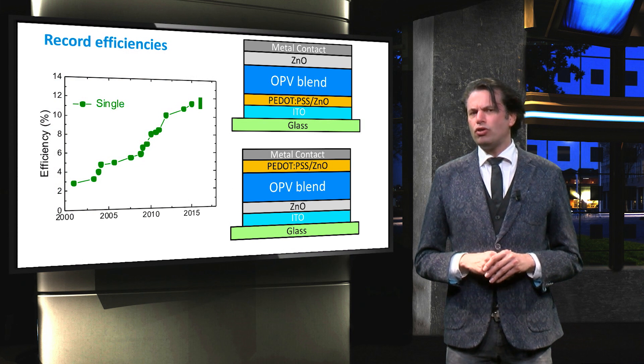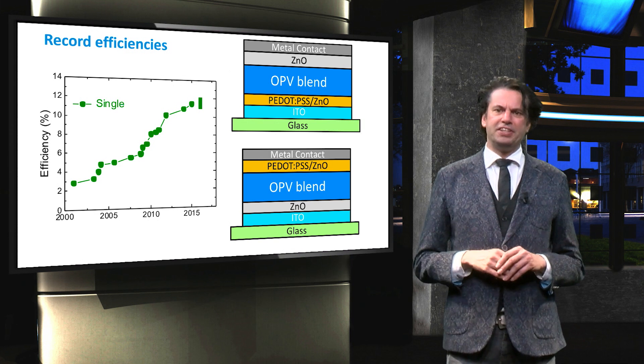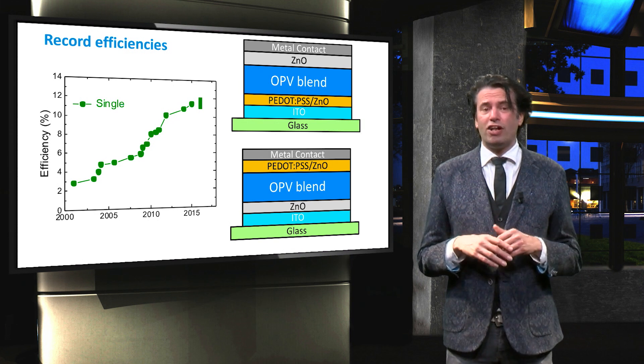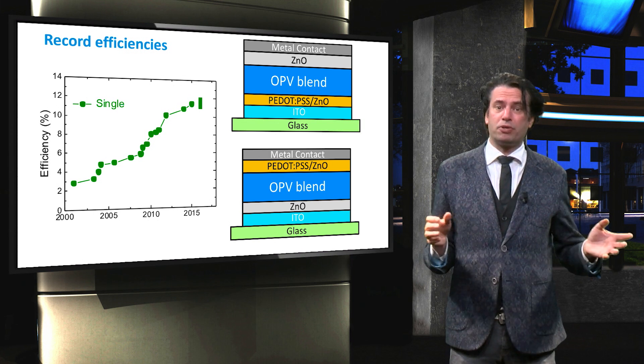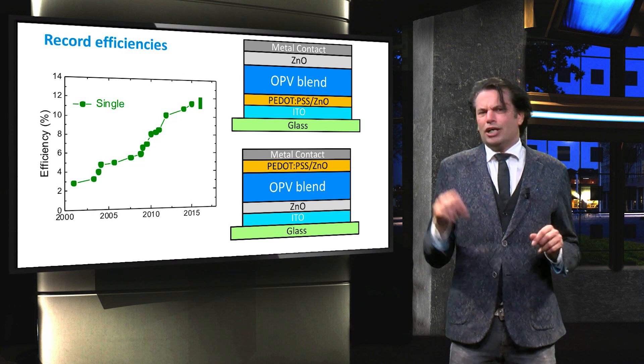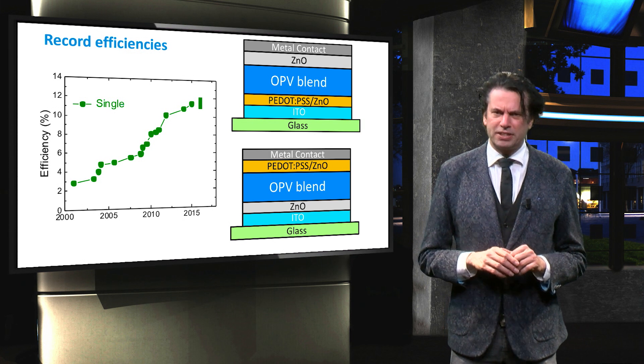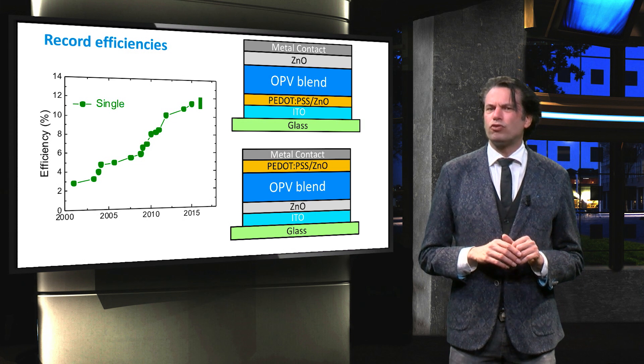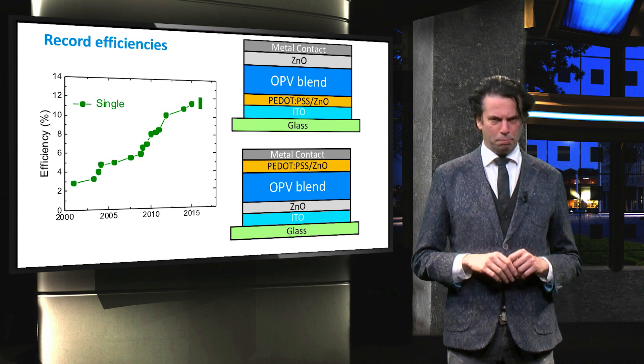Here you see the evolution of the record single-junction organic solar cells over the last 15 years. Currently, record efficiencies between 11 and 12.1 percent have been reported on lab scale, for cells with typical sizes of 1 square centimeter or even smaller. To my knowledge, the highest efficiency for single-junction organic solar cells is obtained by Philips 66 in the USA, a 12.1 percent conversion efficiency for a cell with a size of 2 by 2 millimeters.